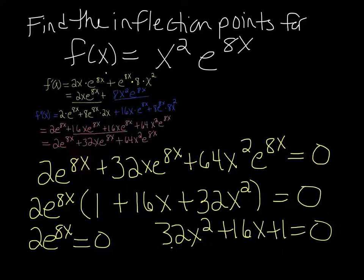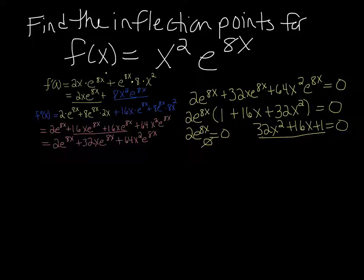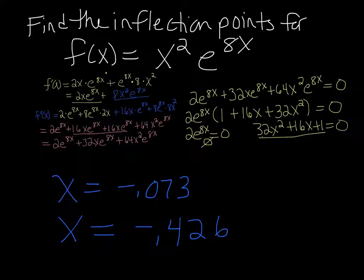Well, there's nothing you can plug in x for 2e to the 8x to make it 0. So this one is a no solution. But this one, 32x squared plus 16x plus 1, you can put in your graphing calculator, your quadratic formula program, or just use a quadratic formula. And when you do that, you should come up with two answers. x equals negative 0.073, or x equals negative 0.426.